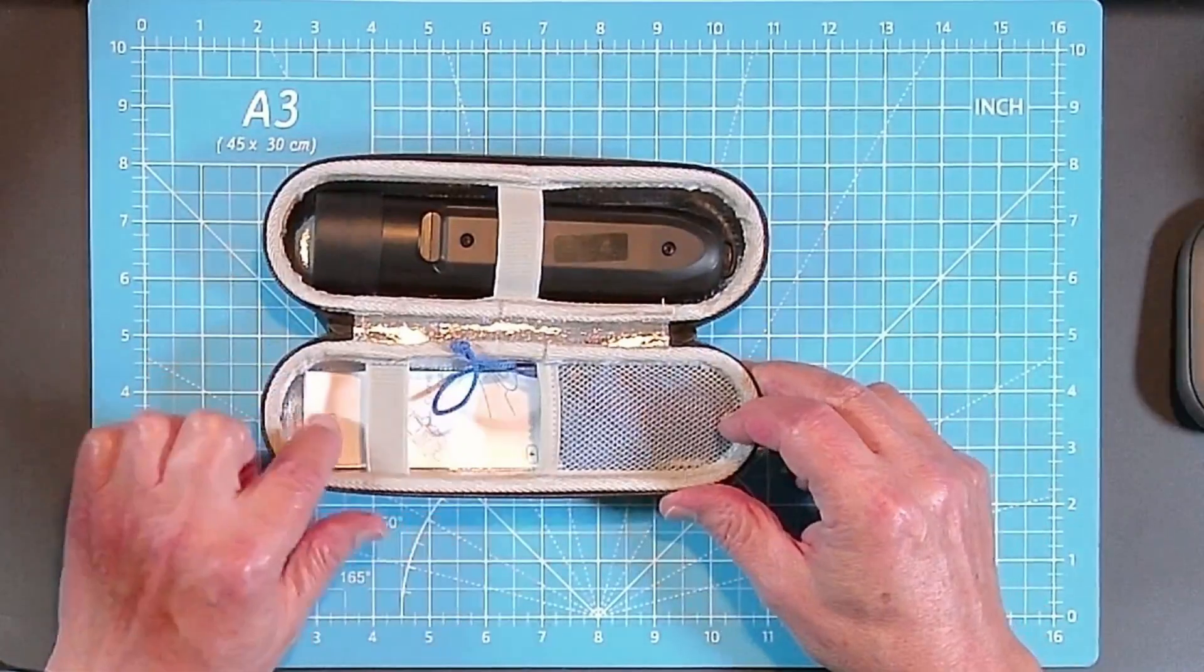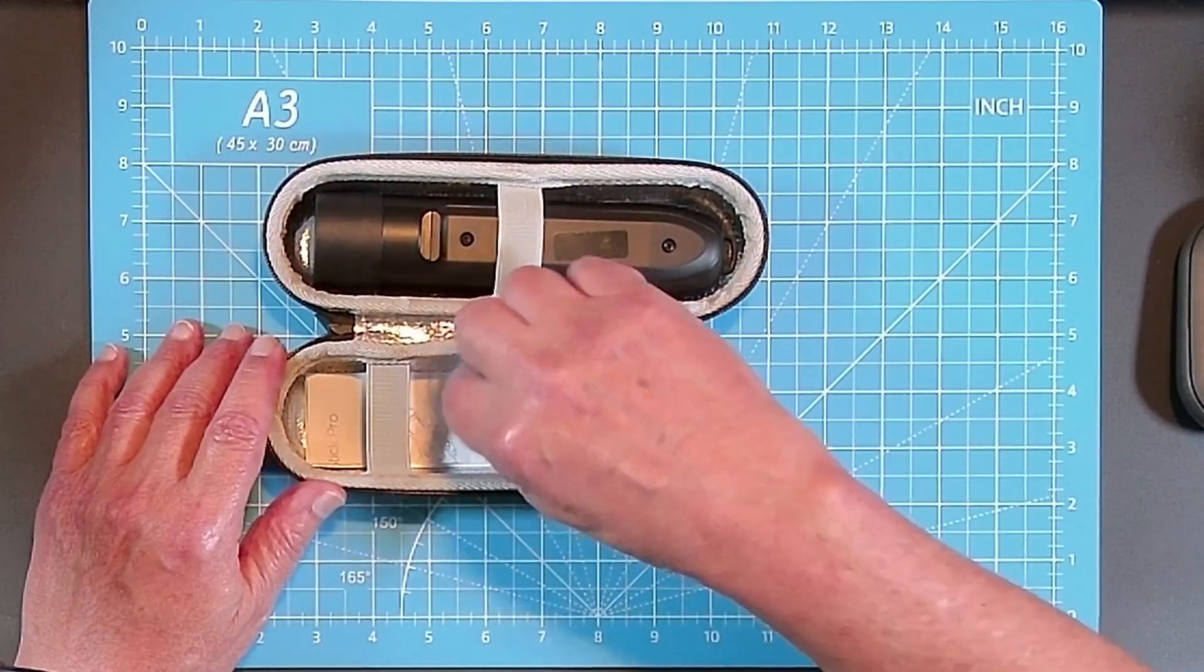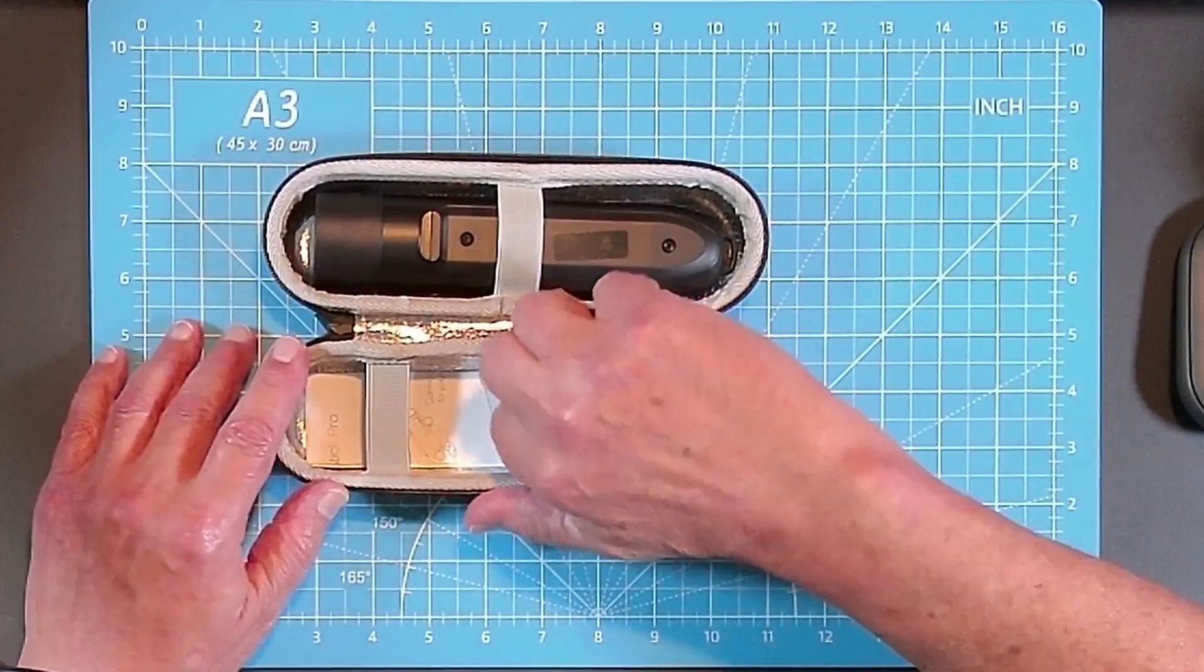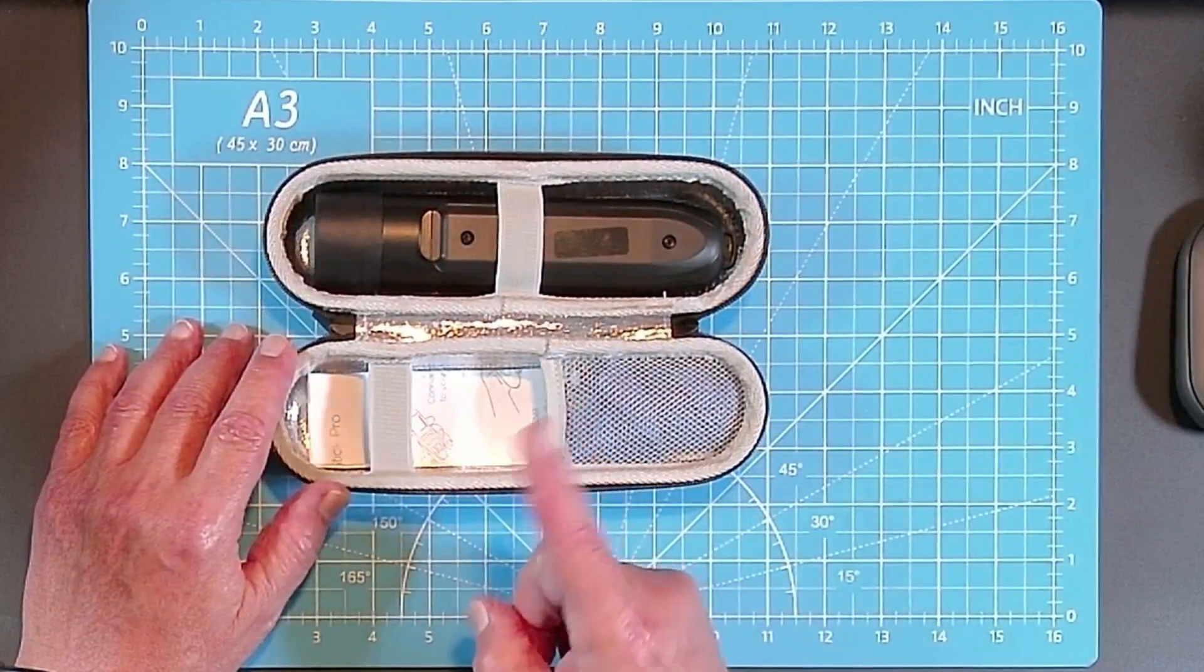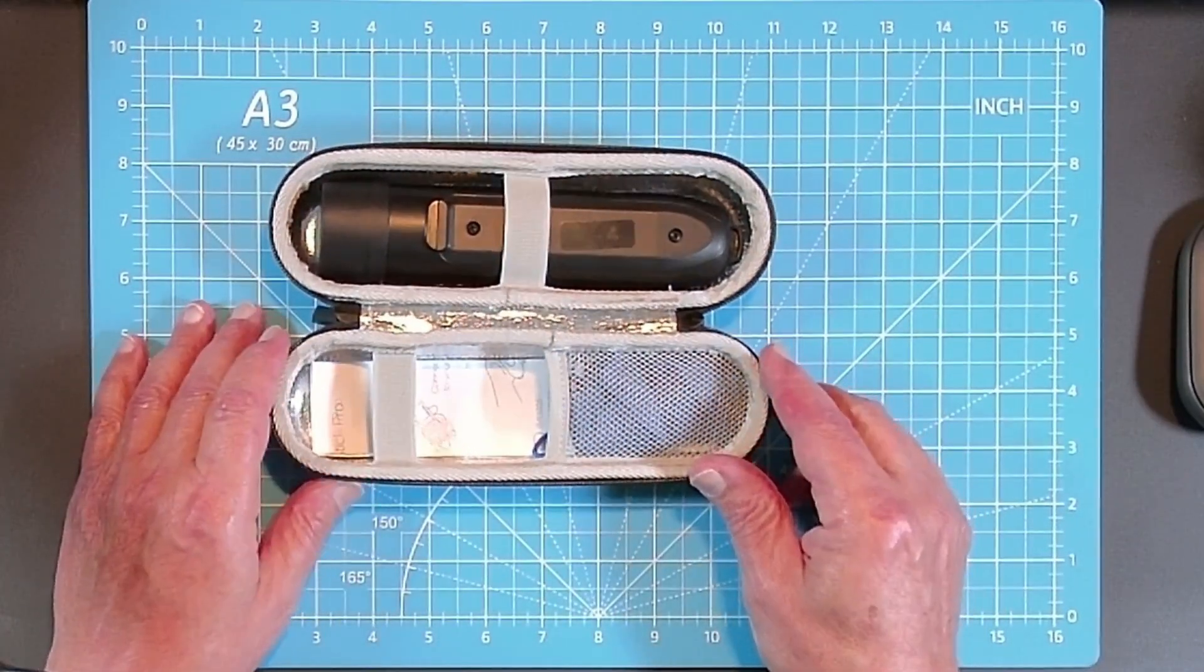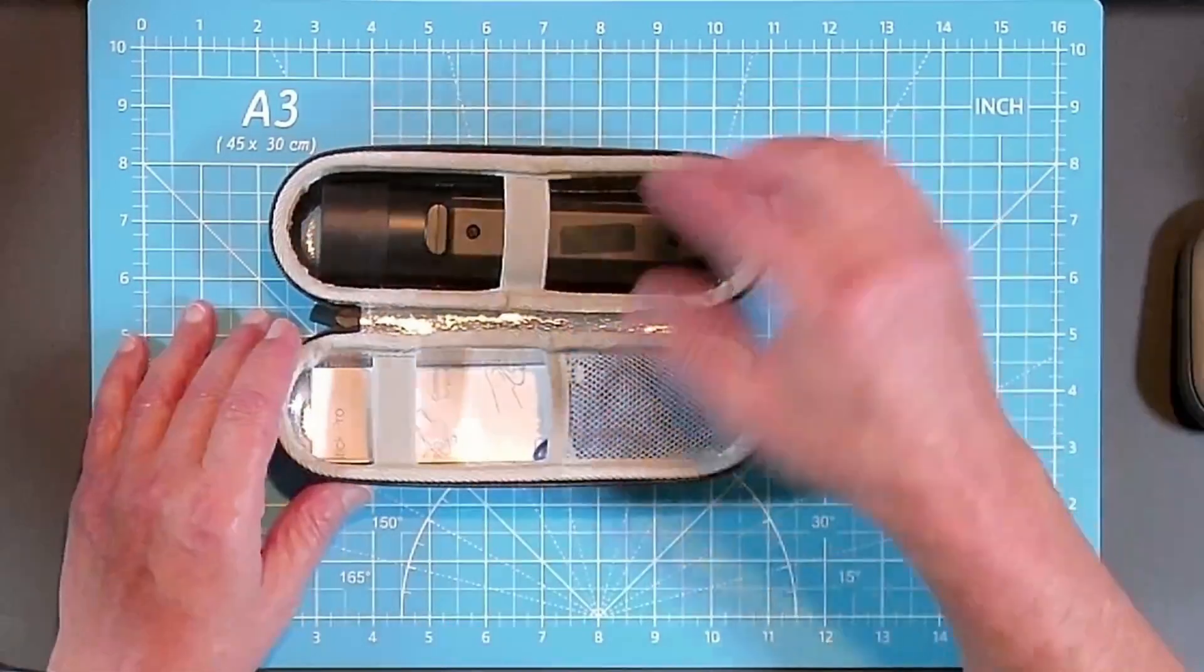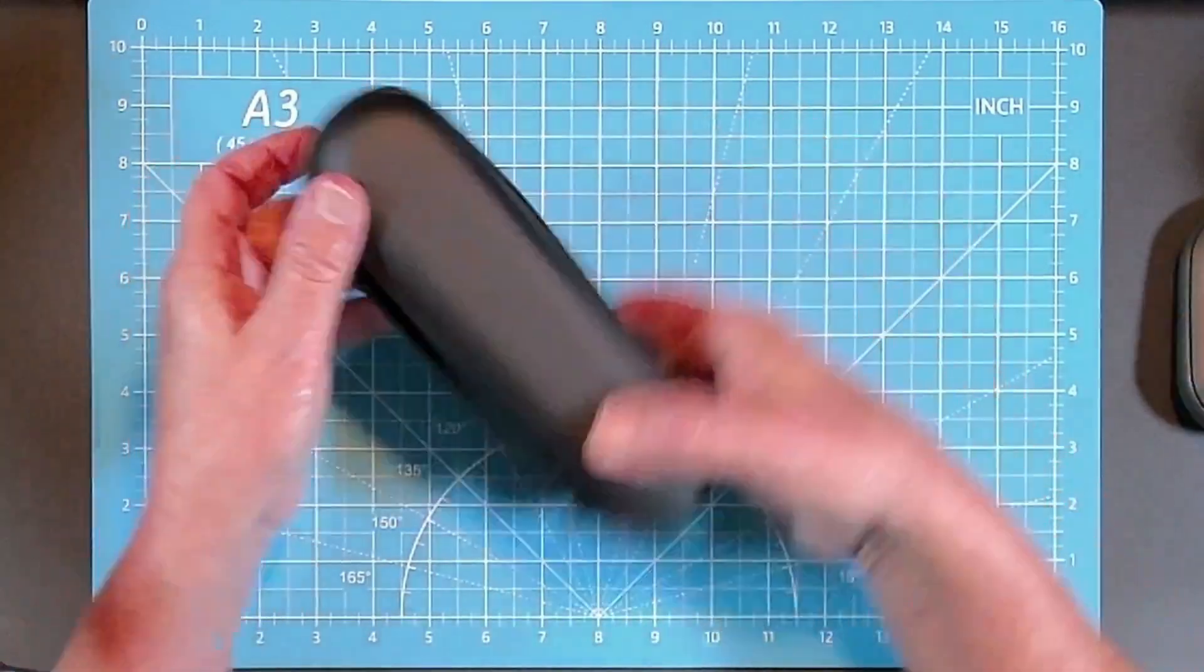But look at all this extra space you have here. You have a couple of options, right? You can put your power cord in there so you could charge the stick pro on the go. I've been looking for a battery that will fit in here and I haven't found the right size yet. All the lipstick size batteries are an inch in diameter and that's just a bit too much for this case. It won't close all the way. So I'm still looking for that, but I've got some extra space. Close it up.